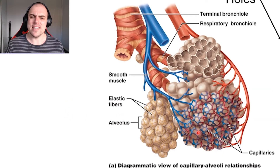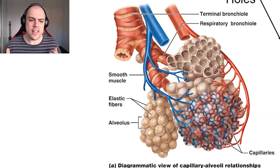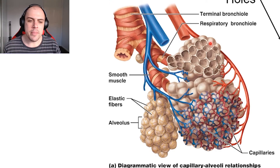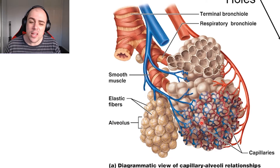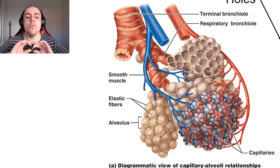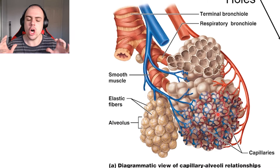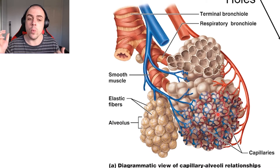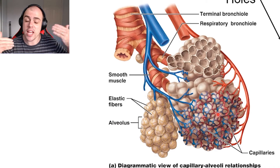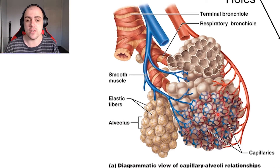So what are the alveoli exactly? They are essentially air-filled pockets found within the lungs. As air comes down and enters these air pockets, we can see that on the outside they are completely layered in blood vessels — in these capillaries. We want to maximize the amount of contact that the capillaries have with these alveoli to ensure we can maximize the exchange of oxygen and carbon dioxide.